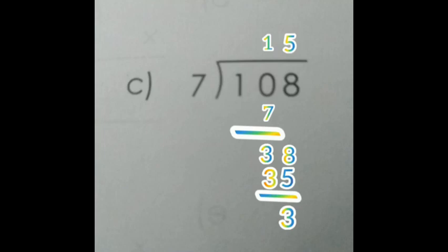So subtract 10 minus 7. If we take 2, 7 twos are 14. 14 is greater than 10, so we should not take 2 times 7. 1 times 7 is 7. Subtract 10 minus 7, we will get the answer as 3. In the dividend, 8 is there, so bring down 8. Then we will get 38.